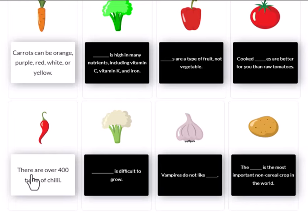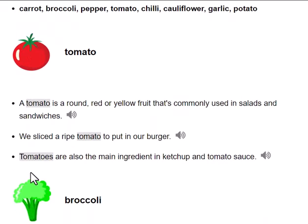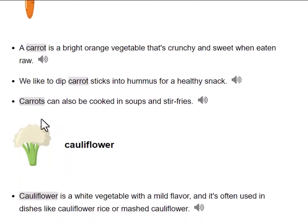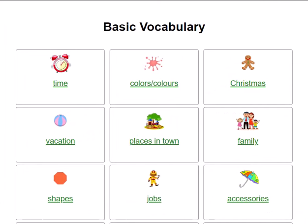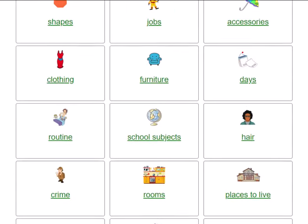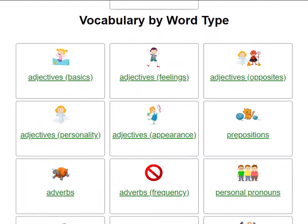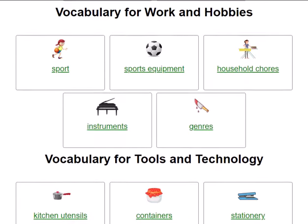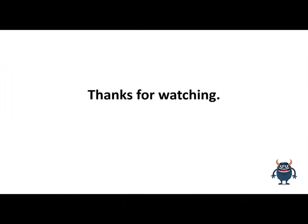Finally, we have example sentences. Here are the words that we chose at the start and there are three example sentences for each one. You can press this icon here to hear the sentence being read aloud — for example: 'Broccoli is a green vegetable with small florets that's high in vitamins and fiber.' Remember, there are 83 different categories: basic vocabulary, food vocabulary, vocabulary by word type, grammar, vocabulary for nature topics, work and hobbies, tools and technology, and travel. Thanks for watching and good luck with your vocabulary learning.